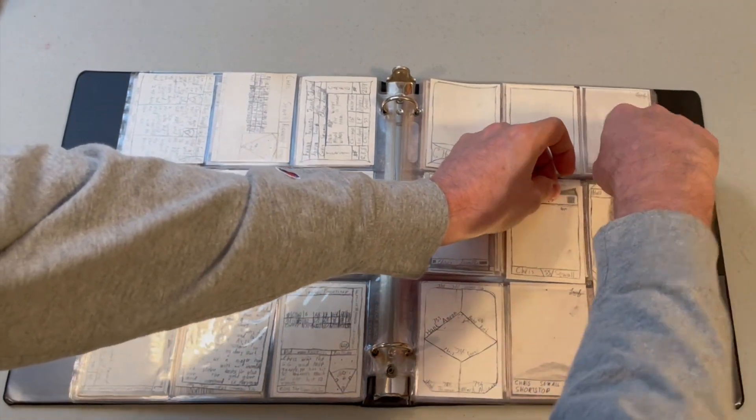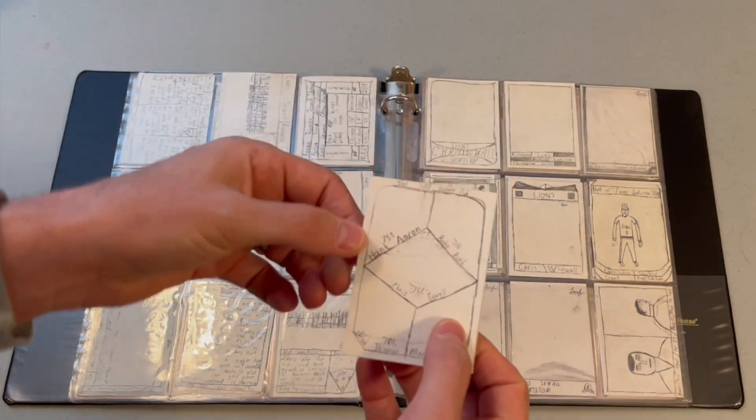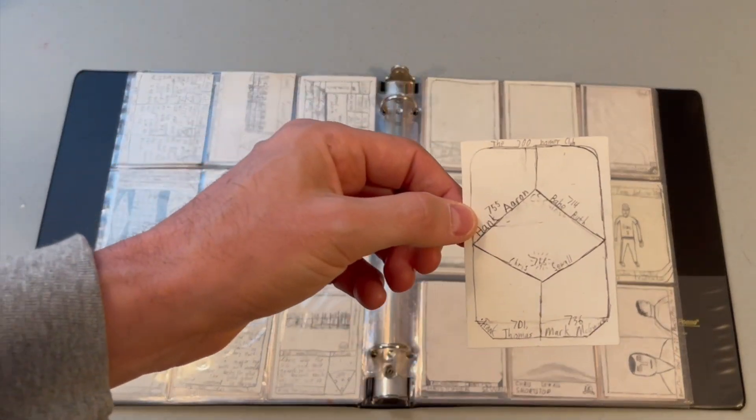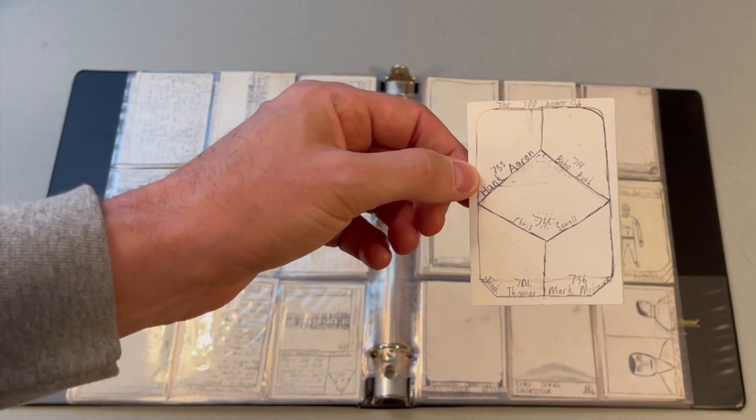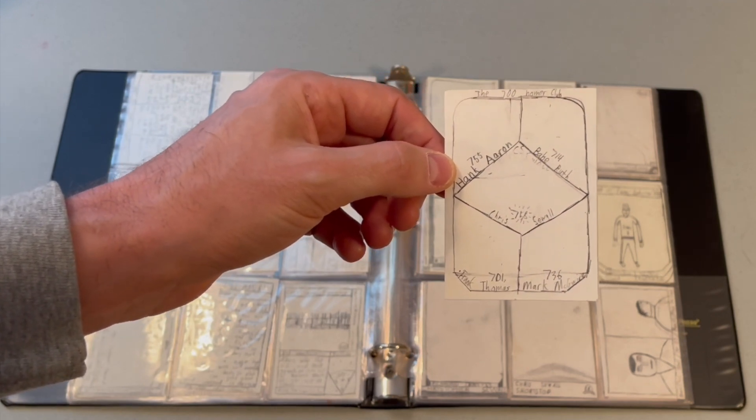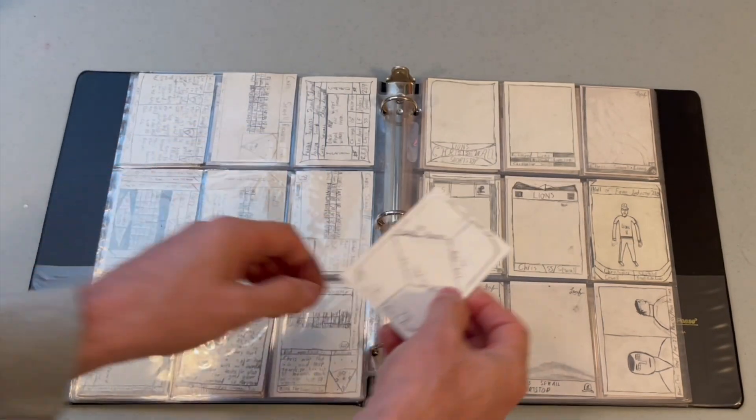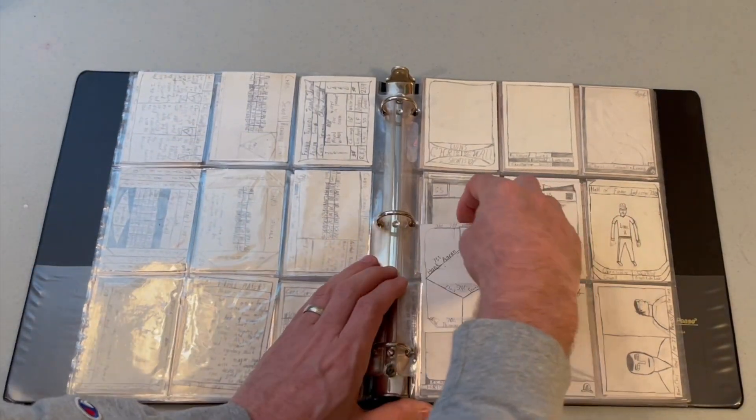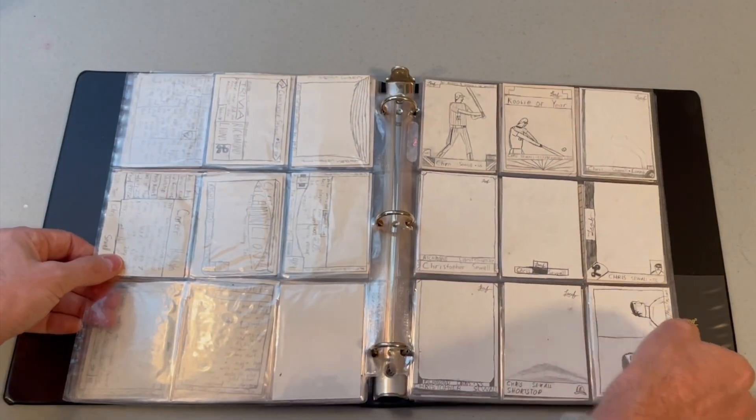This next card is sort of a cool concept. This was the 700 home run club card. There were only five members at the end of my career. Hank Aaron and Babe Ruth had already gotten there. There's me in the middle with 758, number one all-time. But I also put that Frank Thomas and Mark McGwire eventually reached 700 home runs. This was again in the early 90s we were making this, Thomas and McGwire both early in their careers. Neither of them actually did get 700, but they both reached 500. So it wasn't a crazy prediction, we'll say.